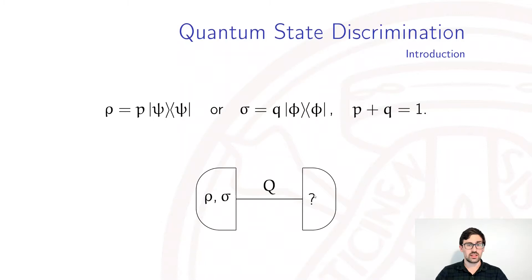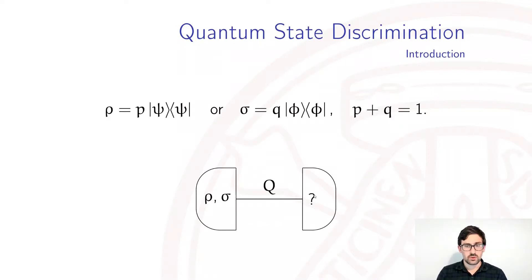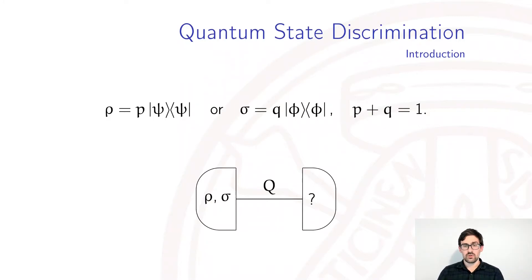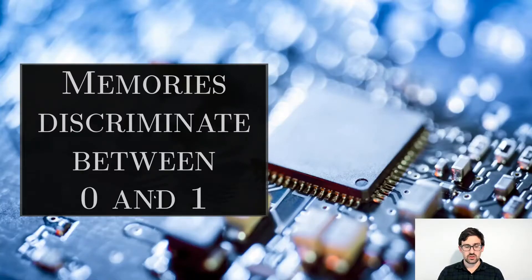For instance, if we'd like to save the simplest piece of information ever — that is a bit, so 0 or 1 — on a memory, to read that information back we need to discriminate the two states the memory system is in. As a consequence, memories have to be able to discriminate between 0 and 1, so to discriminate between two states.